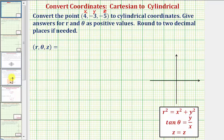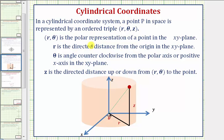For a quick review, r, theta is the polar representation of a point in the xy-plane, where r is the directed distance from the origin in the xy-plane, this distance here. Theta is the angle counterclockwise from the polar axis, or positive x-axis in the xy-plane, pictured here.